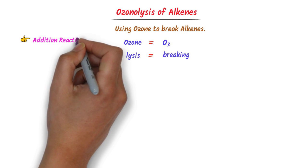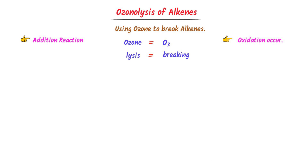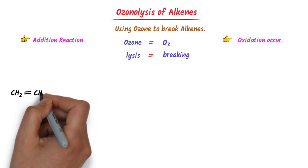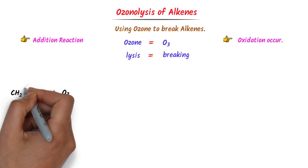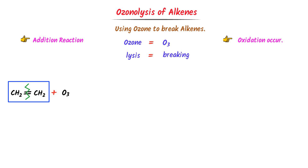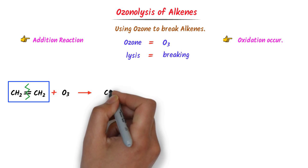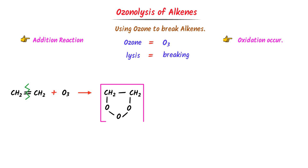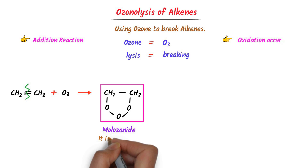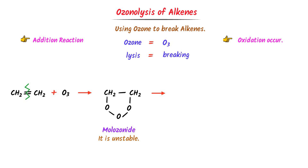Remember that it is an addition reaction where oxidation occurs. Now consider this alkene, ethene. I add ozone to it. After reaction, ozone will break this ethene. I take these two carbons and write CH2 single bond CH2. The ozone has three oxygen atoms, which I write here — they are all single bonded. This compound is known as molozonide, and it is an unstable compound.